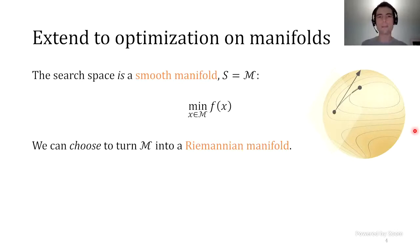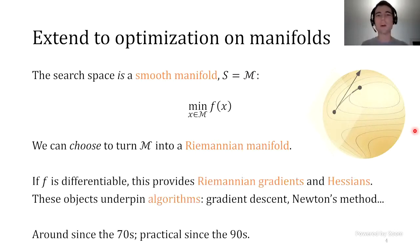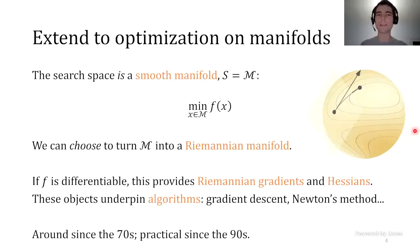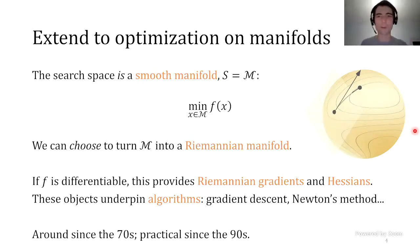We'll go over what that means precisely later on. The reason you might want to do that is, echoing what happens in the Euclidean case, if you do—and if your cost function is sufficiently differentiable—then this will afford you concepts of Riemannian gradients and Riemannian Hessians. With those objects, you can then design algorithms like gradient descent and Newton's method, only in a Riemannian sense, in a more general sense. Euclidean spaces are Riemannian manifolds, but there are many Riemannian manifolds that are not Euclidean spaces.